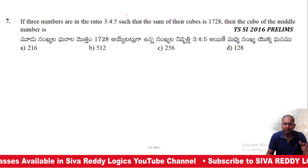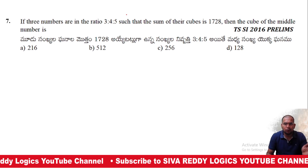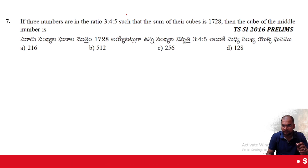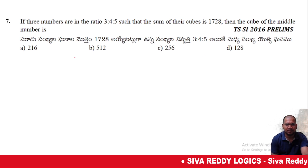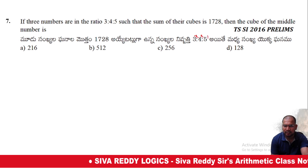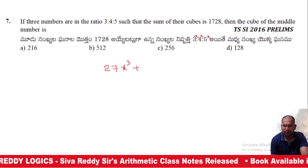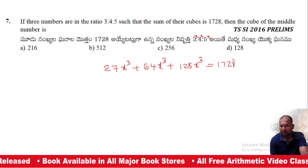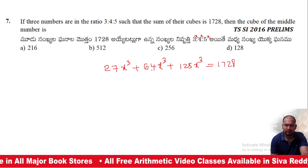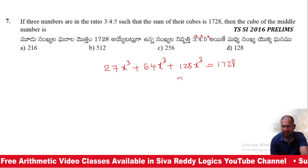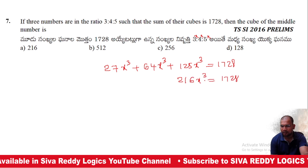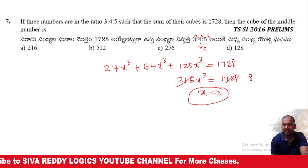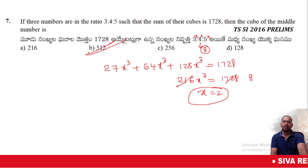Seventh question: Three numbers are in ratio 3:4:5, and the sum of their cubes is 1,728. Find the cube of the middle number. Let the numbers be 3x, 4x, 5x. Then 27x³ + 64x³ + 125x³ = 216x³ = 1,728. So x³ = 8 and x = 2. Middle number is 4x = 8, so cube of middle number is 8³ = 512. Option B will be the right answer.